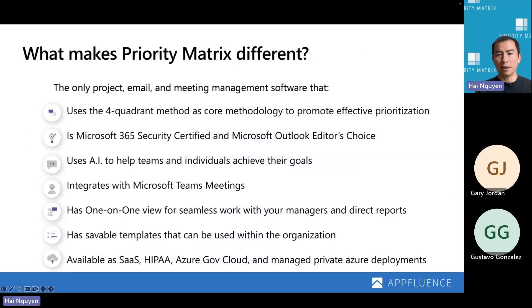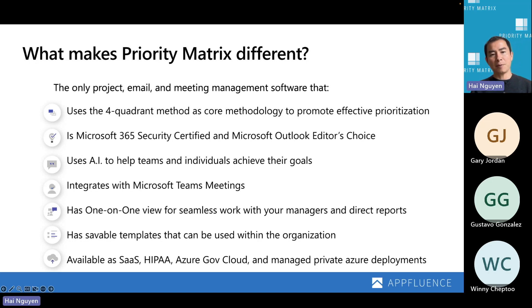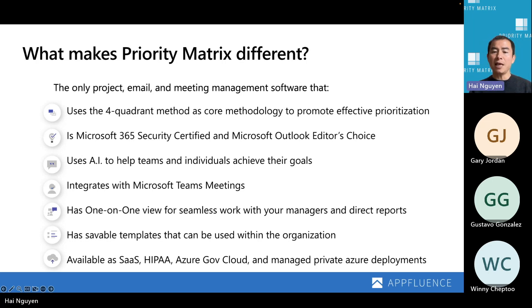What makes PartyMatrix different and better than other existing solutions? First, we use the four-quadrant methodology as the core to help promote effective prioritization. The other aspect is that we're Microsoft 365 Security Certified for the Web App, Outlook App, as well as the Teams App. We're also Outlook's Editor's Choice App. There are AI capabilities inside PartyMatrix to help you achieve your goals, and PartyMatrix has really deep integrations into Microsoft Teams that will enhance your experience.